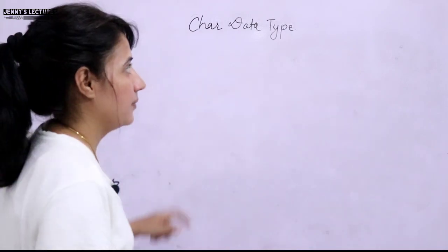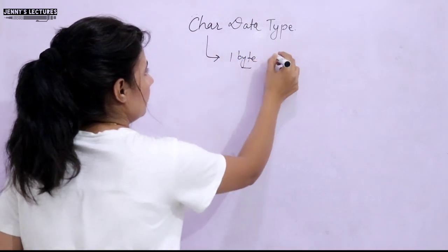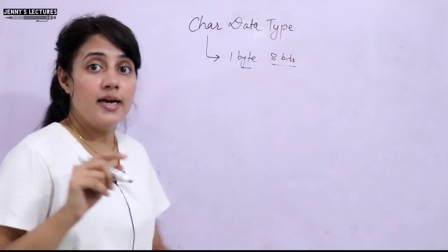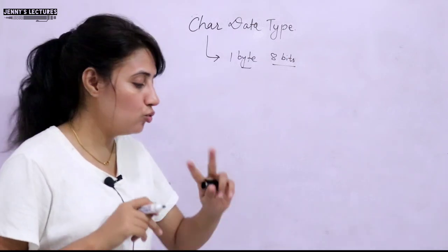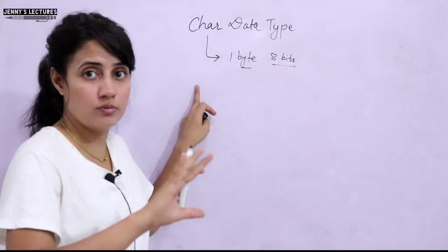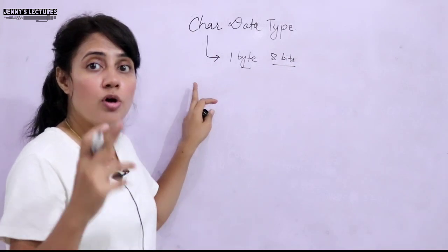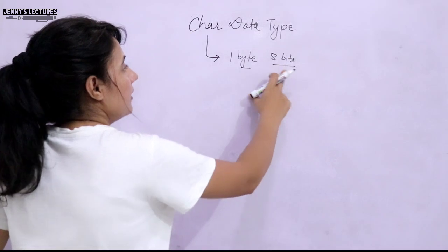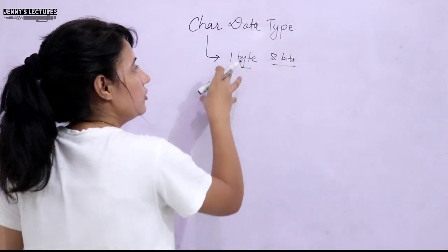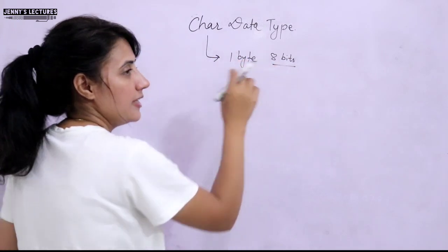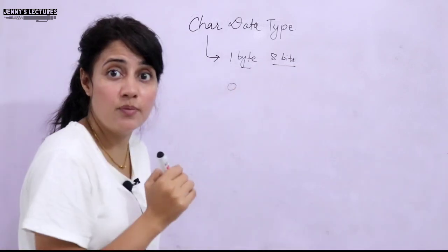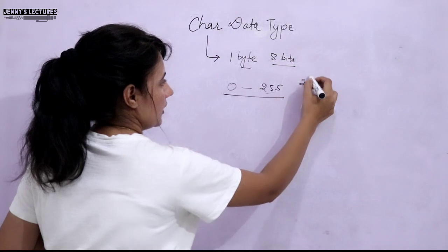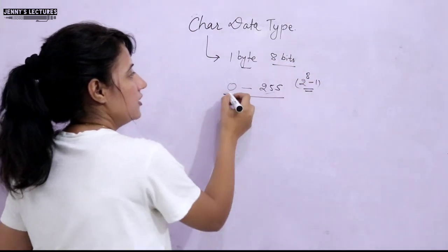The char data type takes one byte of memory, that is eight bits, to store a value. Data modifiers — signed, unsigned, short, and long — can also be used with char. Short int has a size of two bytes, while char takes only one byte, making it the smallest. With eight bits, if all bits are zero the minimum is 0, and if all bits are one the maximum is 255, which is 2 raised to power 8 minus 1. This is for unsigned char.